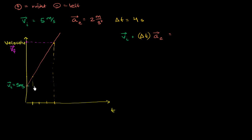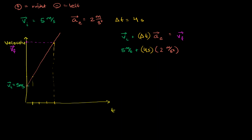If I start at this point and multiply the duration times my slope, I will get to my final velocity. Just to make it clear with the numbers: I have 5 meters per second, plus 4 seconds times our acceleration of 2 meters per second squared. A second cancels with one of the seconds in the denominator. So we have 5 meters per second, plus 4 times 2 is 8 meters per second, which equals 13 meters per second — that is our final velocity.